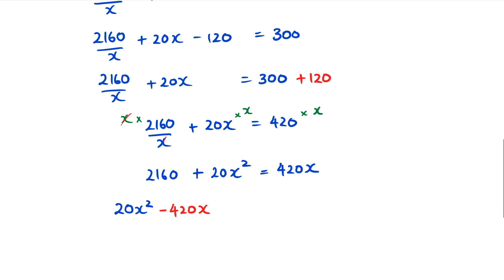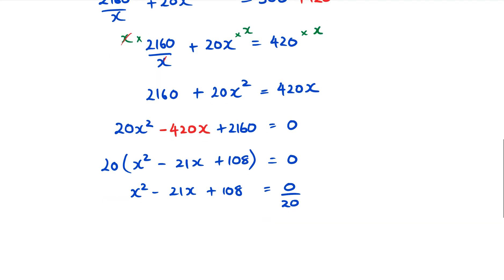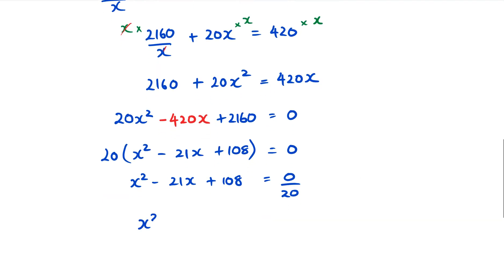I get 20X² - 420X + 2160 = 0. I can see 20 is a common factor, so taking that out: 20(X² - 21X + 108) = 0. At this point I can get rid of the 20 because it becomes 0 divided by 20, which is just 0. So I have X² - 21X + 108 = 0.